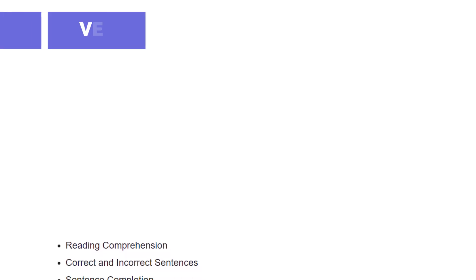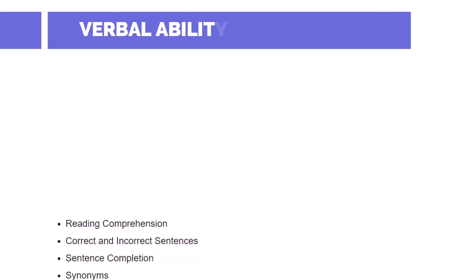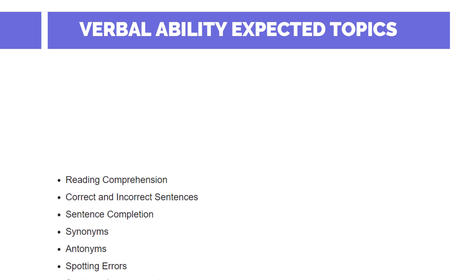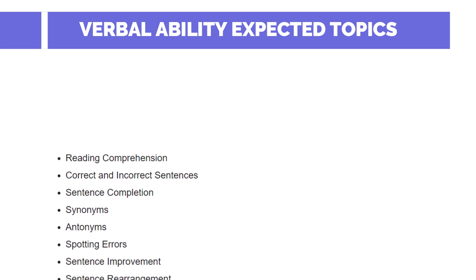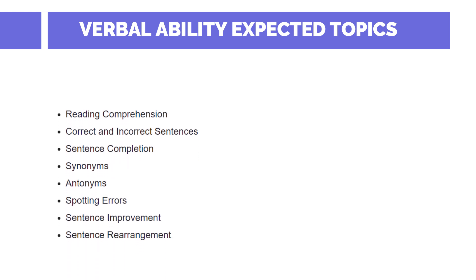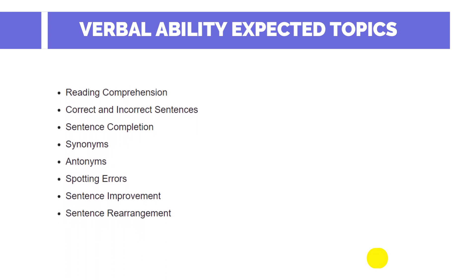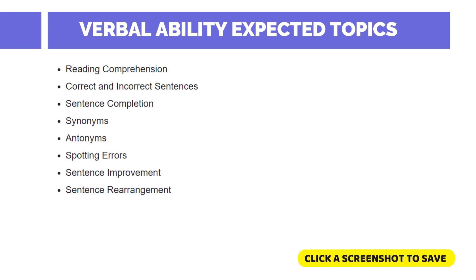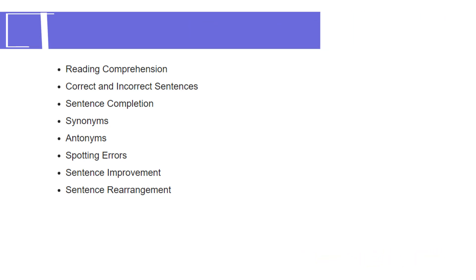For the English Ability section, topics include reading comprehension, identifying incorrect and correct sentences, grammatical errors, sentence completion, synonyms, antonyms, spotting errors, sentence improvement, and sentence rearrangements.